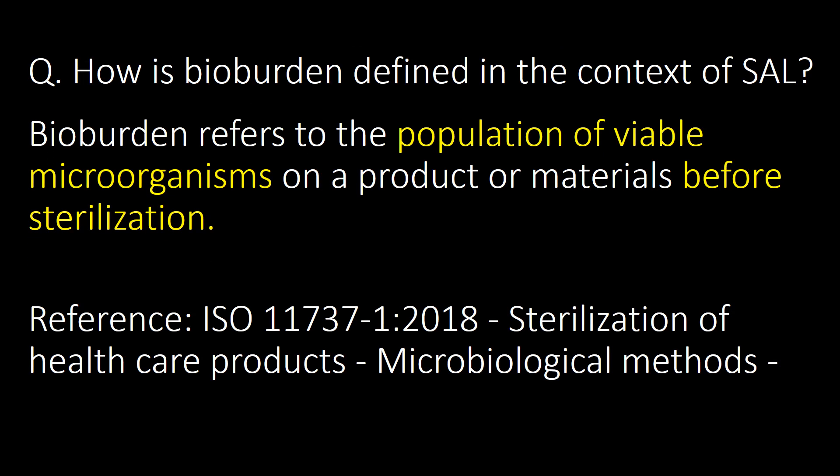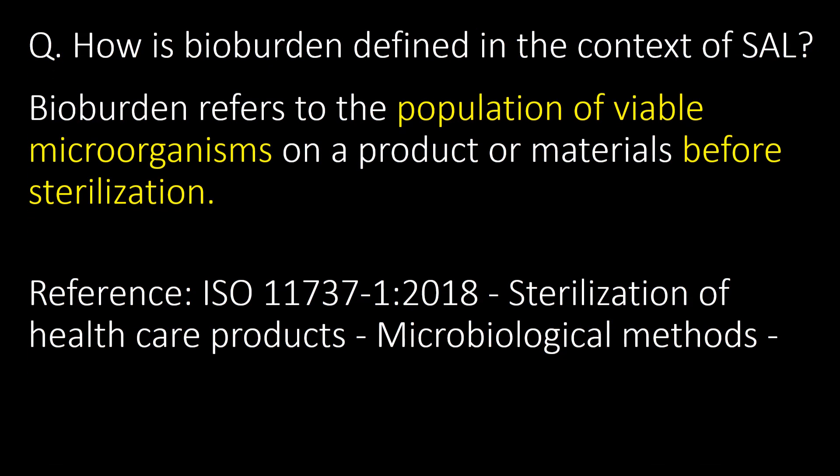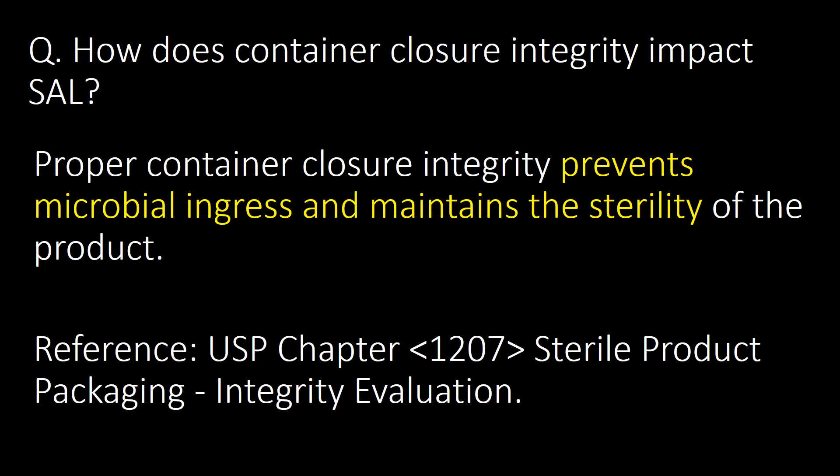How is bioburden defined in the context of SAL? Bioburden refers to the population of viable microorganisms on a product or materials before sterilization. Reference: ISO guideline. How does container closure integrity impact sterility assurance level? Proper container closure integrity prevents microbial ingress and maintains the sterility of the product. Reference: USP Chapter 1207.